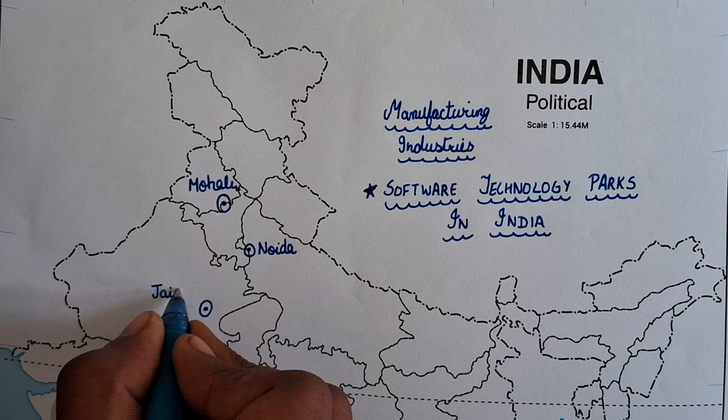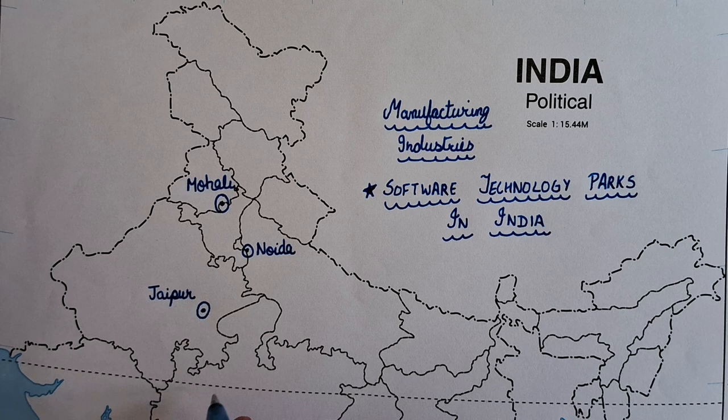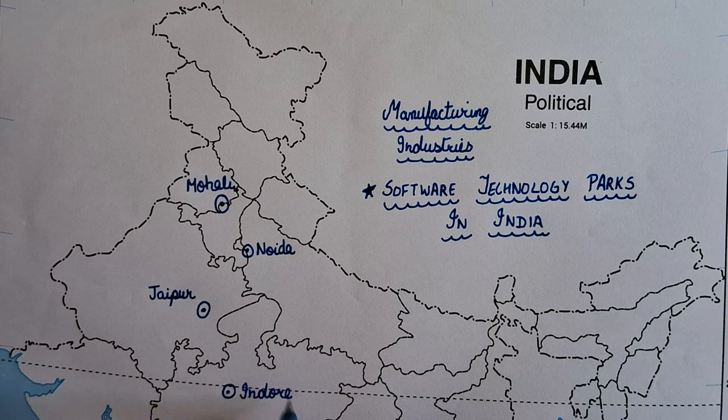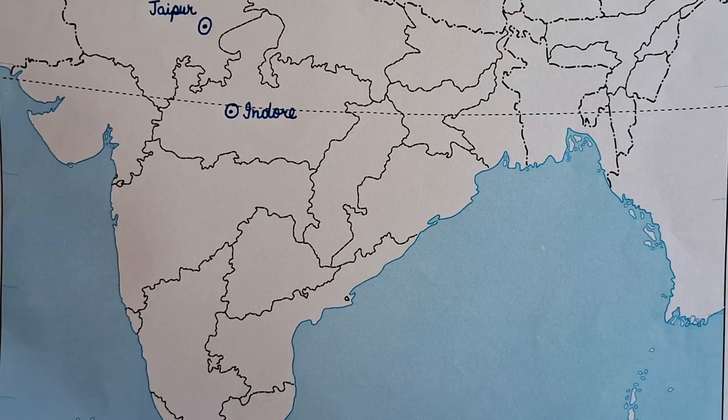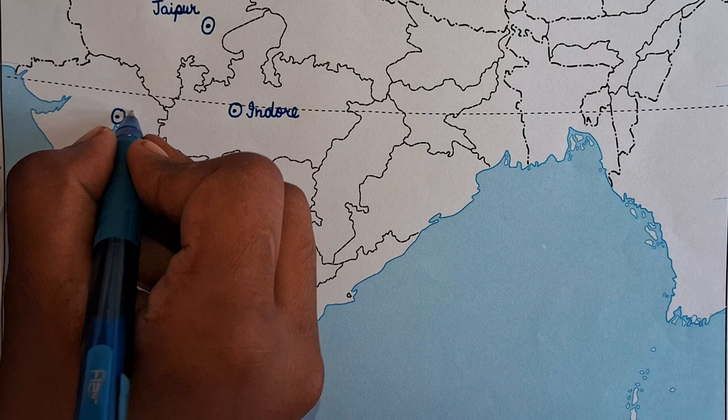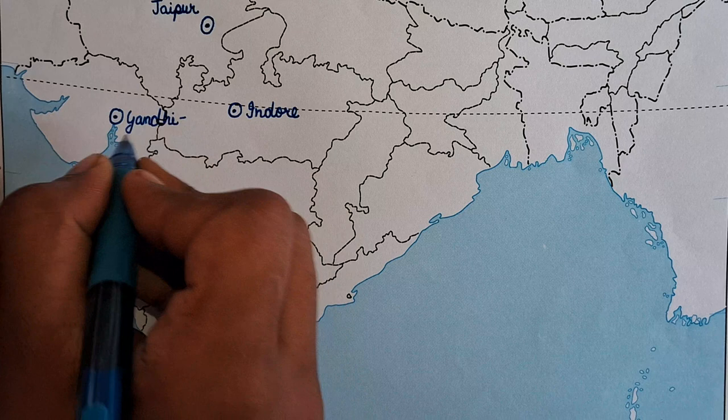Next, coming to Madhya Pradesh — below the Tropic of Cancer passing through India, we have Indore. Next in series, here in Gujarat, we have our 5th software technology park, which is in Gandhinagar.